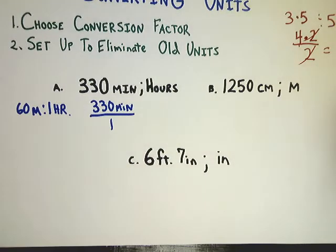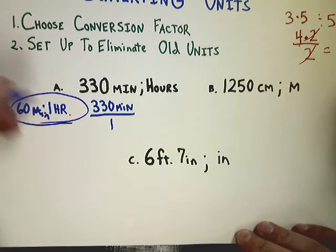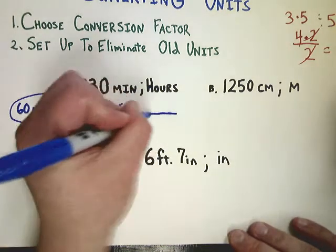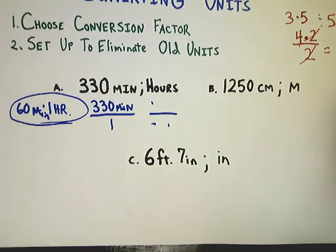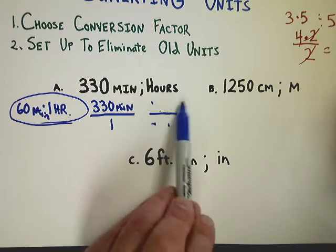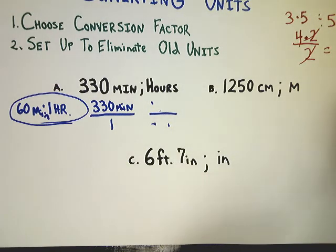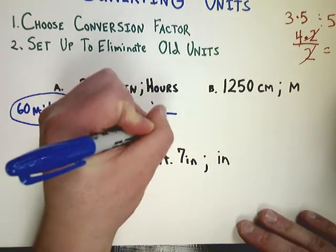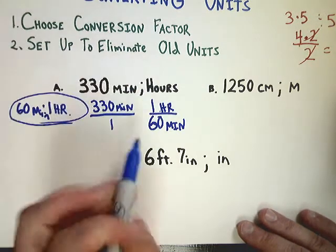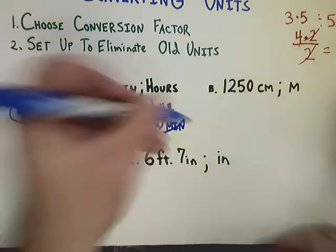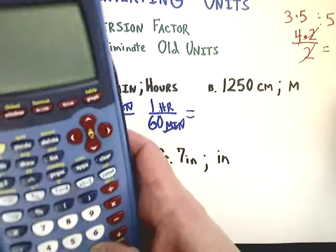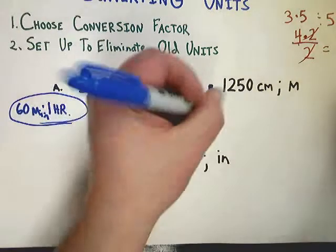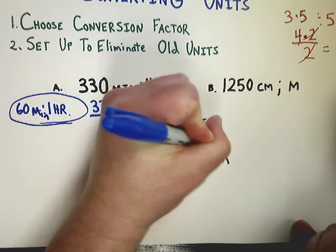So, in this case, when I have my 330 minutes over 1, what I need to do is choose my conversion factor in a way that will eliminate minutes. If I put 1 hour up here and 60 minutes on the bottom, I'll have minutes on the top and minutes on the bottom. That's exactly what I want, because that means the units will cancel. If I put minutes up here, I would have minutes times minutes, which is minutes squared. So, instead, I'm going to choose 60 minutes on the bottom and 1 hour on top. So, I have minutes here, minutes here, I can cancel. And then the math becomes very easy. I just do 330 times 1 over 1 times 60, which you really end up getting 330 divided by 60, and it gives me 5.5 hours.